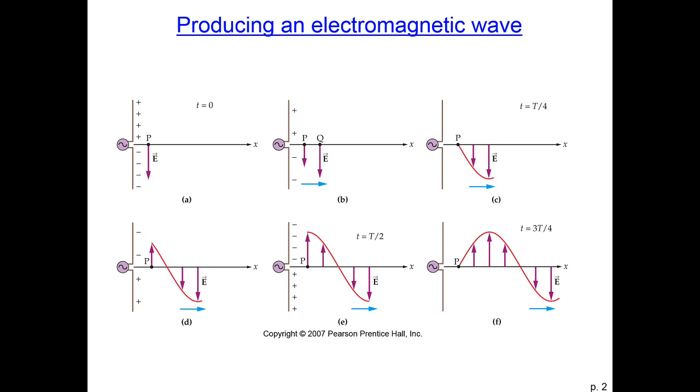An alternating source of voltage is shown here, and so we have attached it to an antenna. An antenna is really just a long straight piece of conducting metal, a wire, and we have attached it to our alternating voltage source.